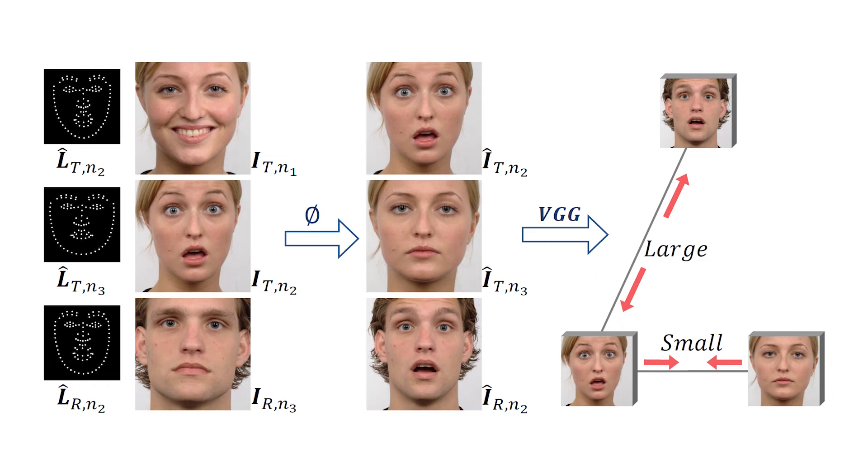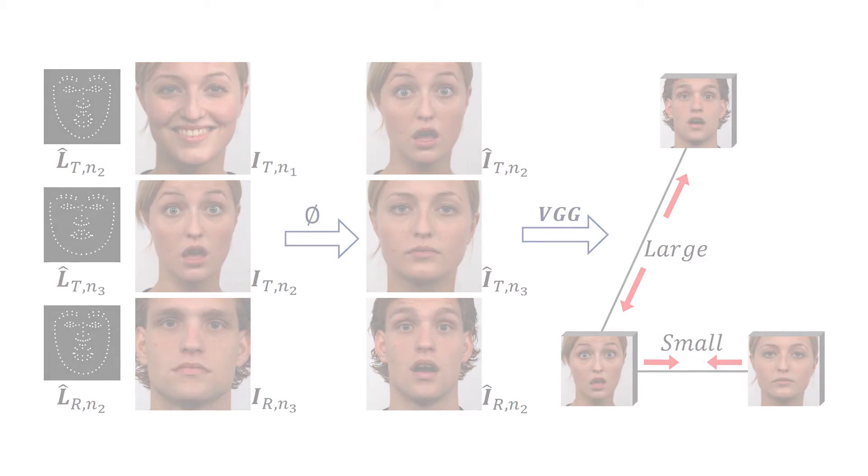A new triplet perceptual loss is proposed to force the GAG module to learn appearance and geometry information simultaneously by maximizing inter-class perceptual variation of re-enacted images and minimizing intra-class perceptual variation.